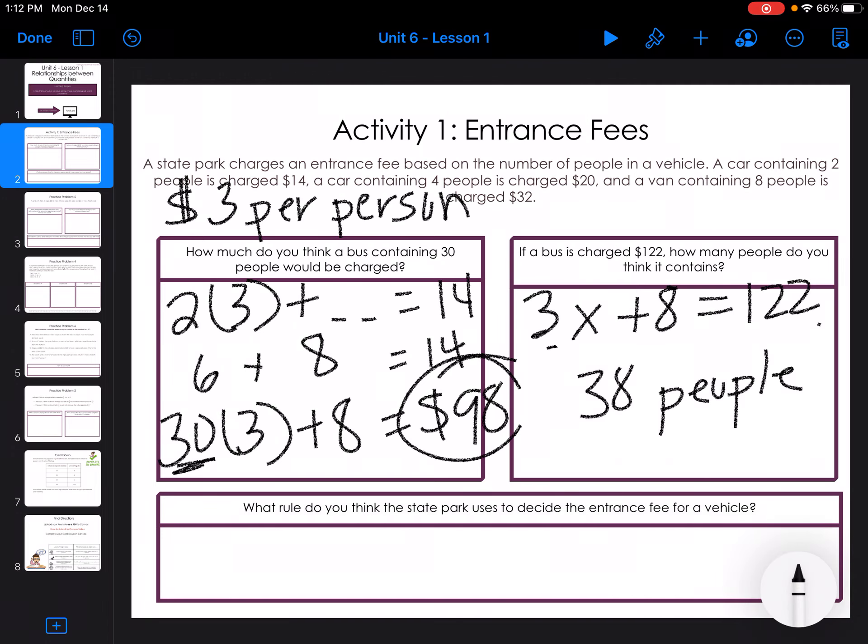So I keep guessing and testing. I'm trying different numbers. So what is the rule that they used? Three times the number of people plus eight for the vehicle.